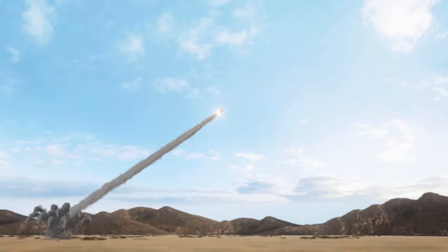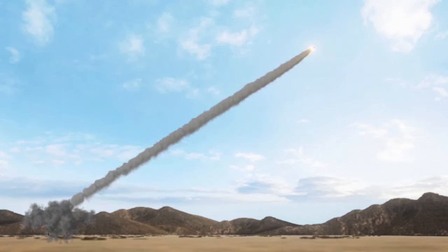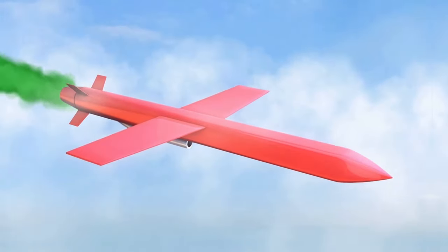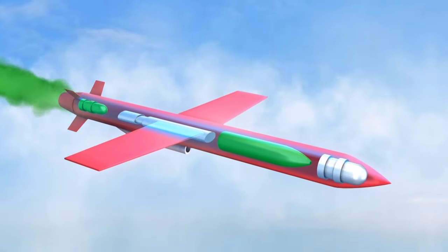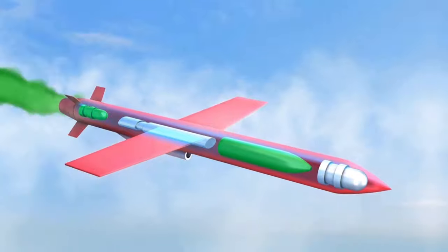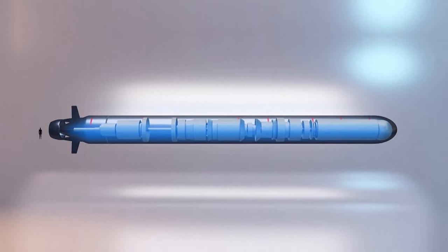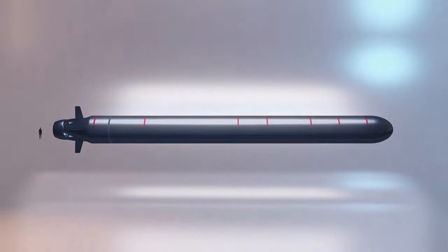CNN reports satellite images show Russia seems to be preparing to test fire another one of its nuclear-powered cruise missiles. This comes just months after CNN reported on Russia's testing of a doomsday drone that's designed to cause massive tsunamis filled with radioactive material.